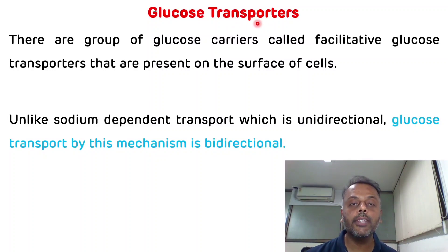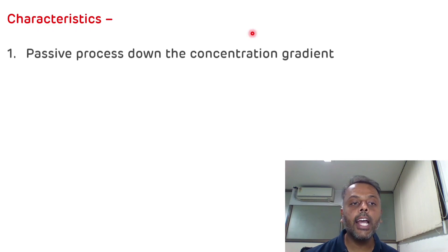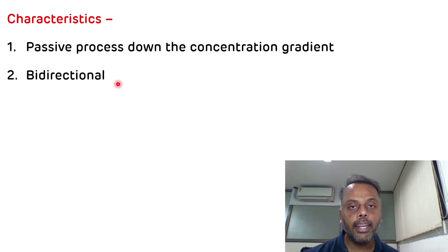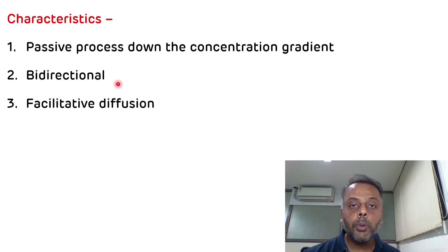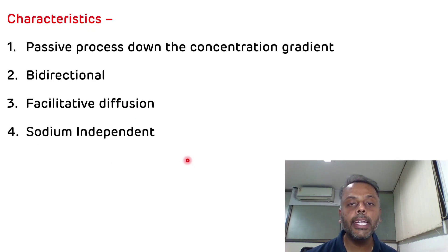Now we will see the characteristics of glucose transporters. The first characteristic is that it is a passive process carried out down the concentration gradient. The second characteristic is that it is a bidirectional process. The third characteristic is that transport of glucose by glucose transporters is an example of facilitative diffusion — transport from high to lower concentration. The fourth characteristic is that glucose transporters are sodium independent.